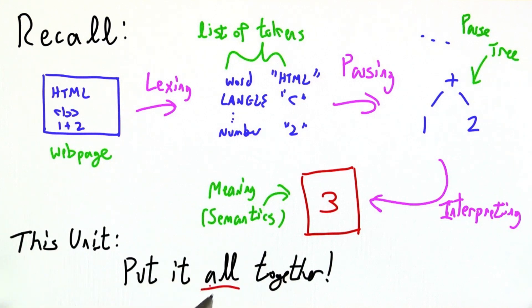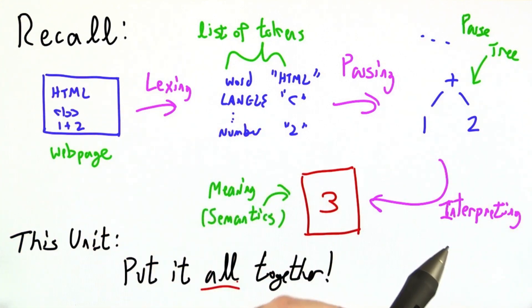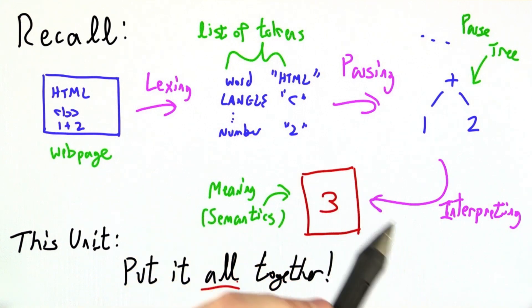In this unit, we're going to put that all together to build a unified web browser, and it's going to require all the tricks that we've learned up to this point, including things like how to debug or what can go wrong if you interpret a program with an infinite loop.